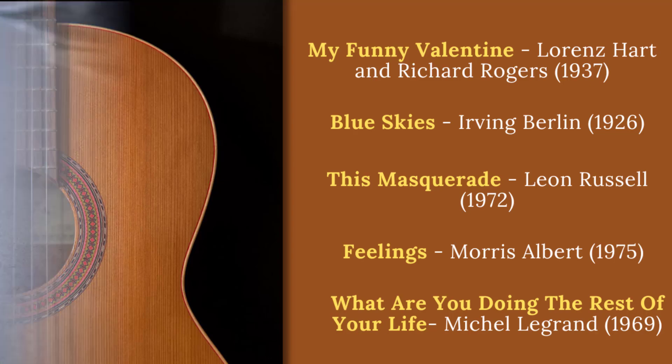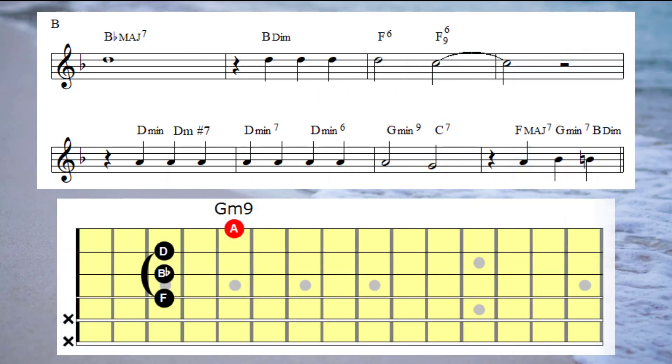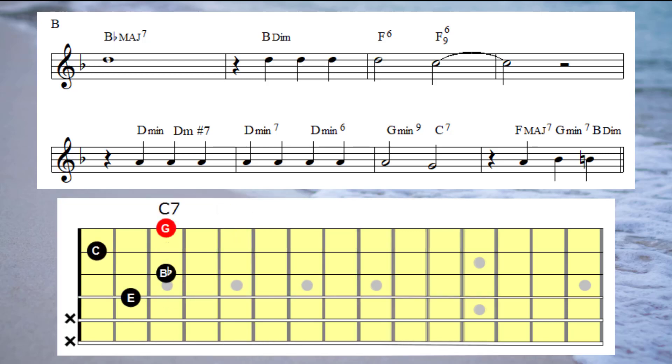Okay, moving on to bar seven, I'm going to play a G minor ninth under the A note and a C seventh under the G.